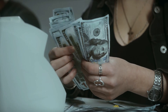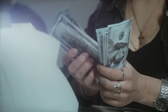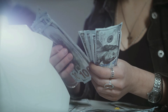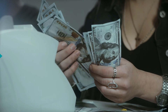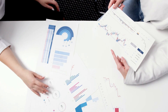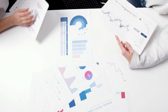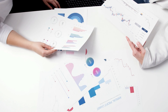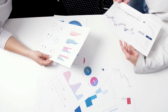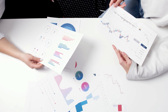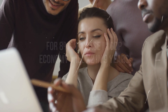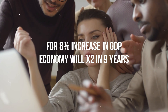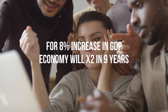The Rule of 72 doesn't work only on money — it can be applied to anything that increases at a compounded rate, for example population growth, GDP growth, and many other things. So if the GDP of a country grows at an 8% rate annually, the economy of that country can be assumed to double in 72 divided by 8, which equals 9 years.